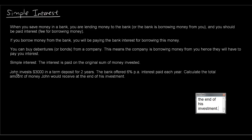John invests three thousand dollars in a term deposit for two years — all that means is John saves three thousand dollars in the bank and has to leave it there for two years without touching the money. The bank offered six percent per annum interest paid each year. The concept of simple interest is that the six percent is calculated from the three thousand dollars only. There's a different kind called compound interest, but for now the six percent is only calculated from the three thousand dollars.